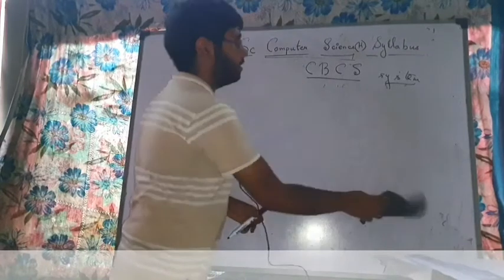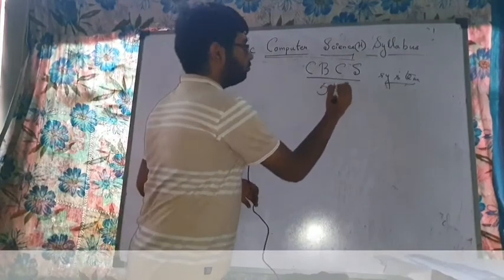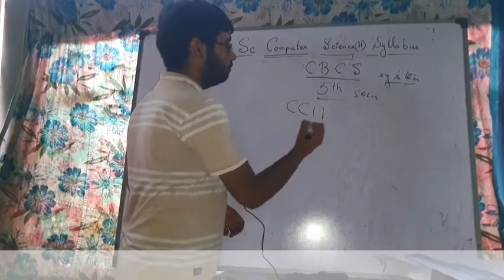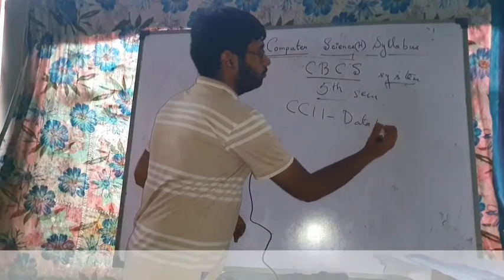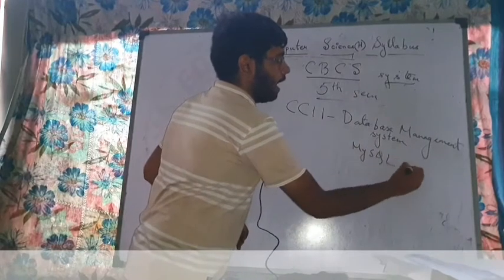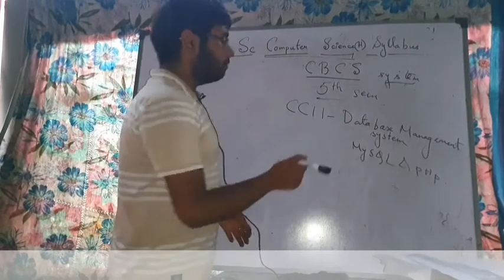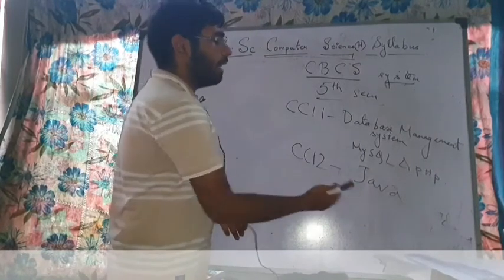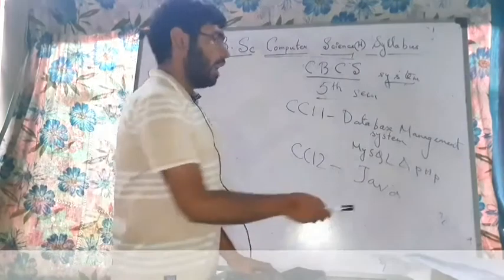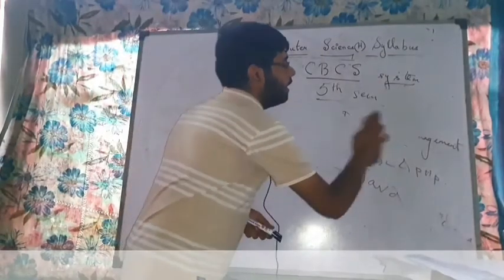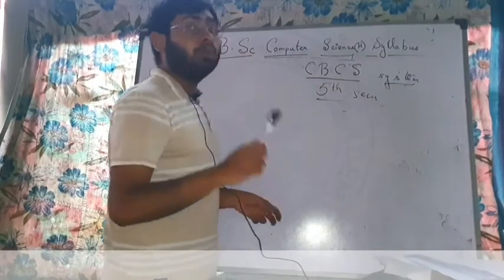In the fifth semester you study two CC papers: CC11 is Database Management System (DBMS), where in practical you will learn MySQL and PHP. CC12 covers Java Programming Language — the practical involves implementing programs in Java, and the theory covers Java concepts.